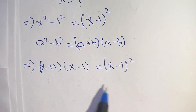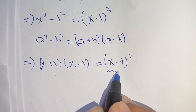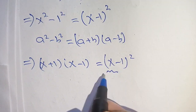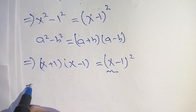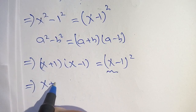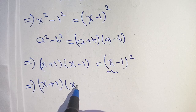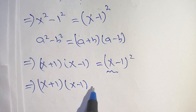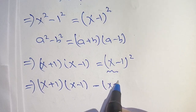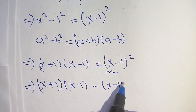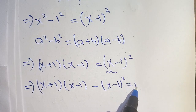In the next step we can shift the right hand side to the left hand side, and it becomes x plus 1 times x minus 1 minus x minus 1 whole squared is equal to 0.